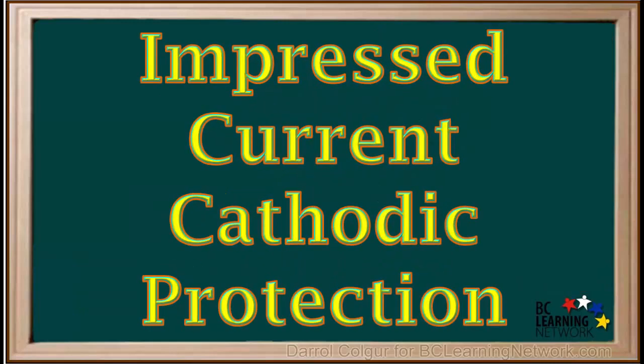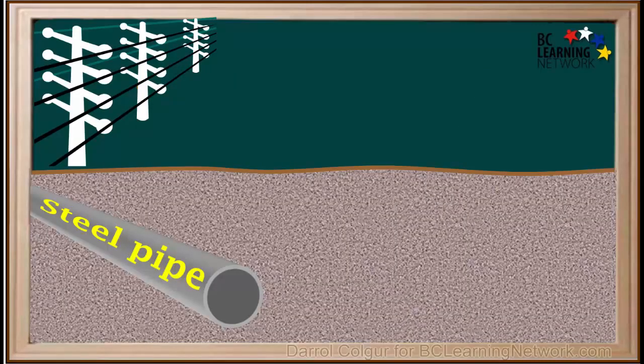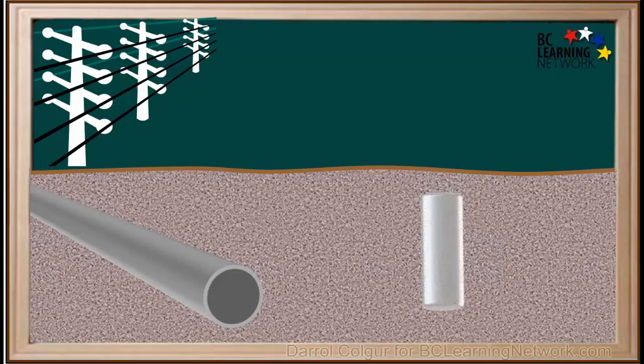In addition to using sacrificial anodes, another method of cathodic protection is the use of what is called an impressed current. Let's say we have an underground steel pipeline we want to cathodically protect. We bury an anode made of an inert metal near the pipe.